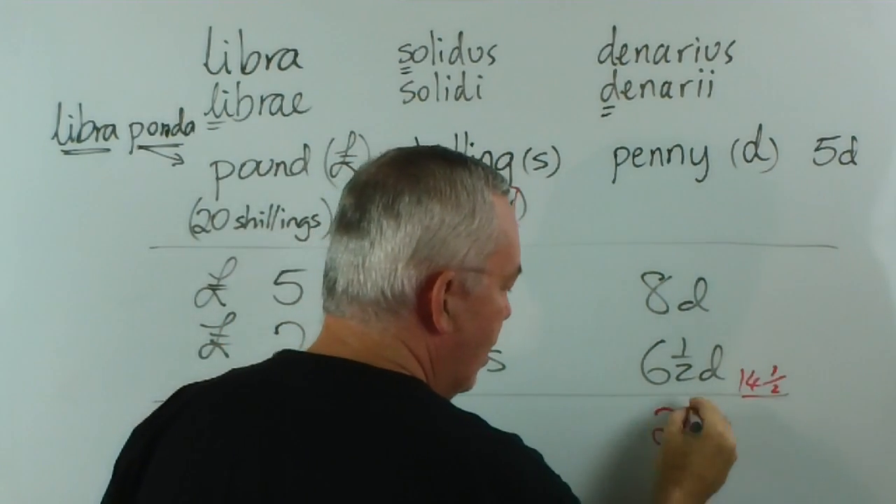So let's add them. Eight and six is fourteen, plus the half is fourteen and a half. So these add up to fourteen and a half pennies. Now, to take a group to the next column, we can only take them in bundles of twelve pennies. Twelve pennies make a shilling. So we take twelve of those to make one shilling. And if we remove those twelve to take over here, what we're left with is two and a half pennies. A tuppence, halfpenny.